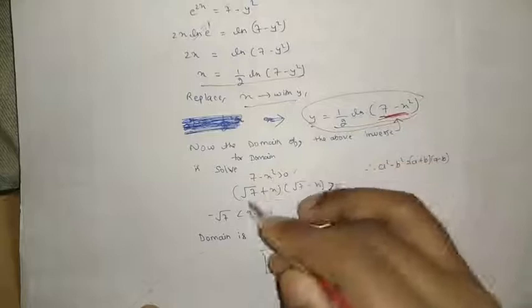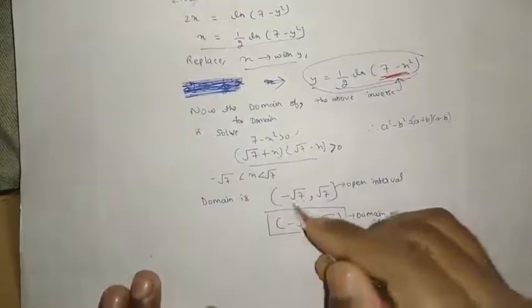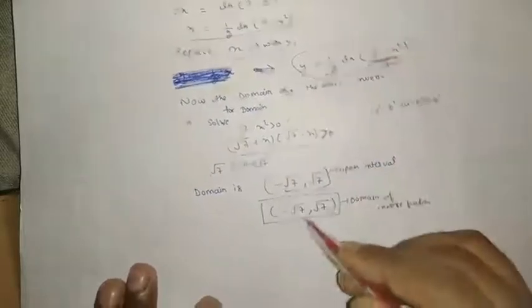So this value must be greater than 0. Now applying the a² - b² property here, we get the domain is (-√7, √7) open interval.